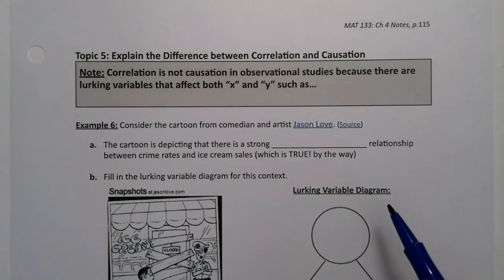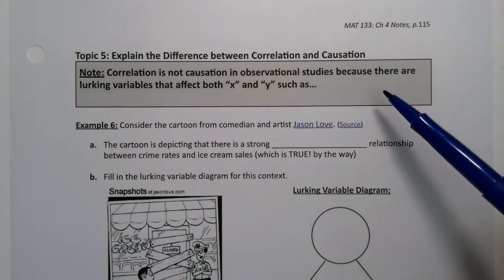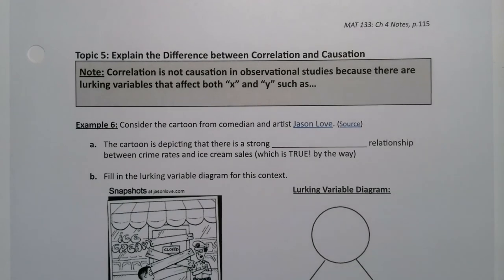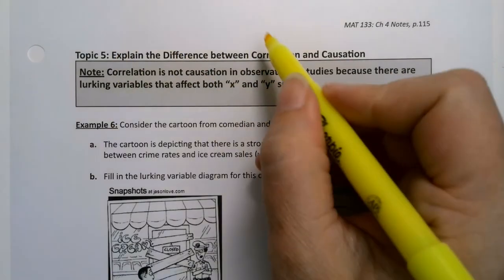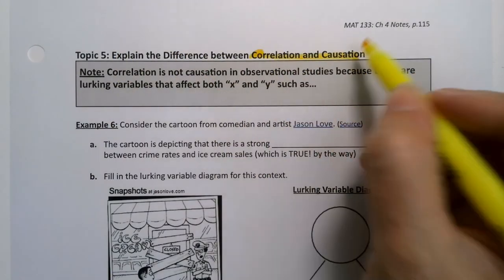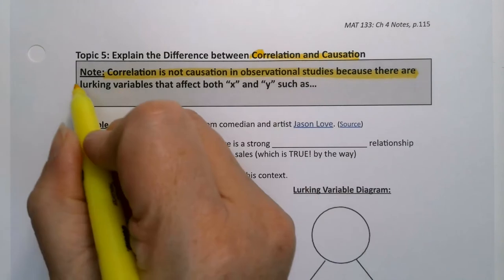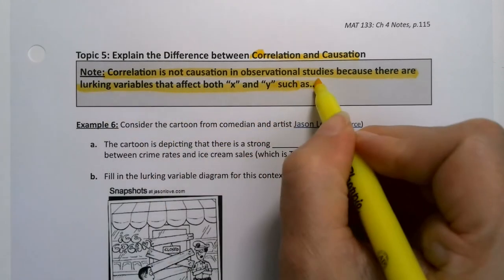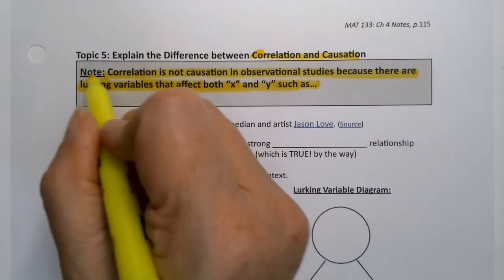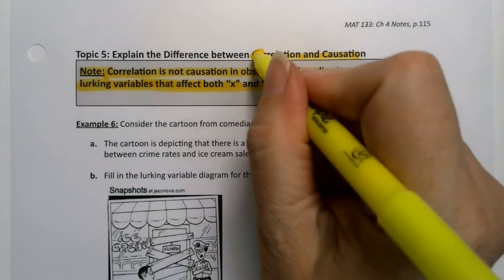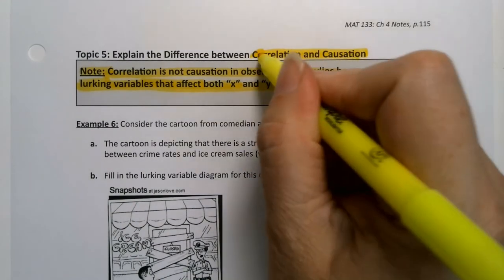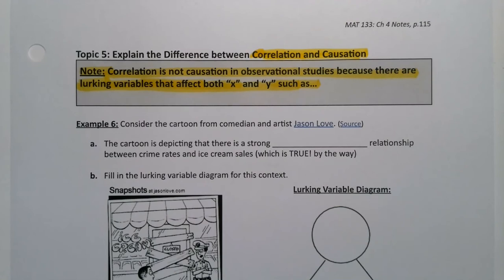So we touched on this at the end of the last video and we talked about this in section 1.2, but it bears repeating one more time that there is a difference between correlation and causation. Correlation is not causation in observational studies because there are lurking variables. Lurking variables are variables that could affect both X and Y and are not included in the study or thought of by the researchers, but they're affecting what's going on. And sometimes they are thought of by the researchers but there's nothing researchers can do about it. That happens with observational studies.